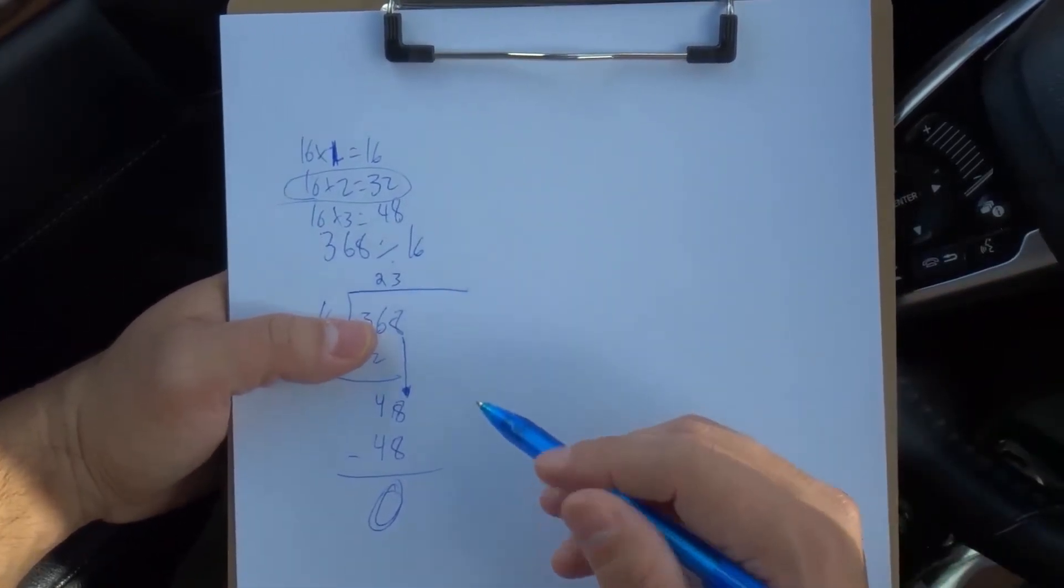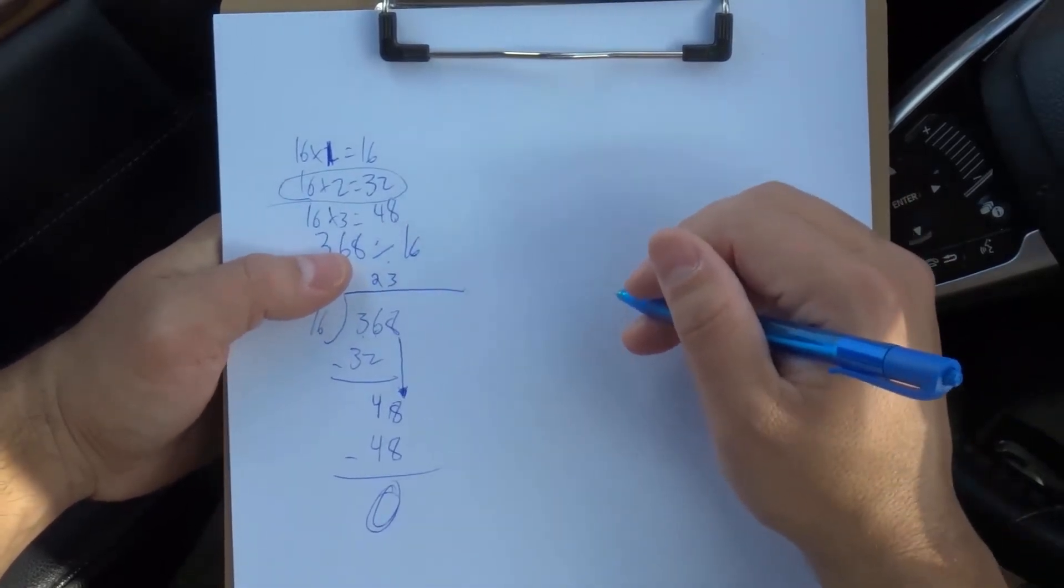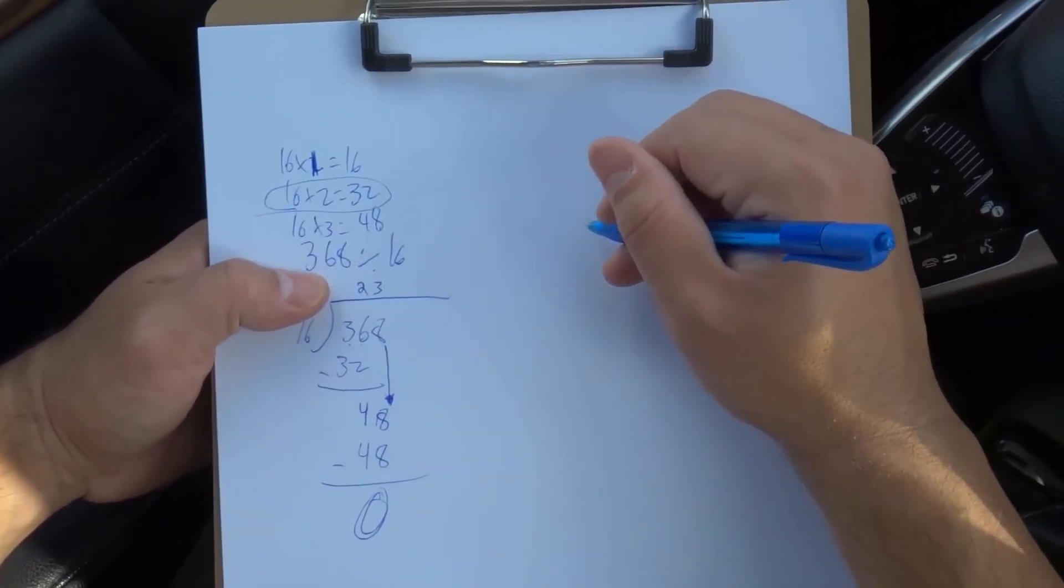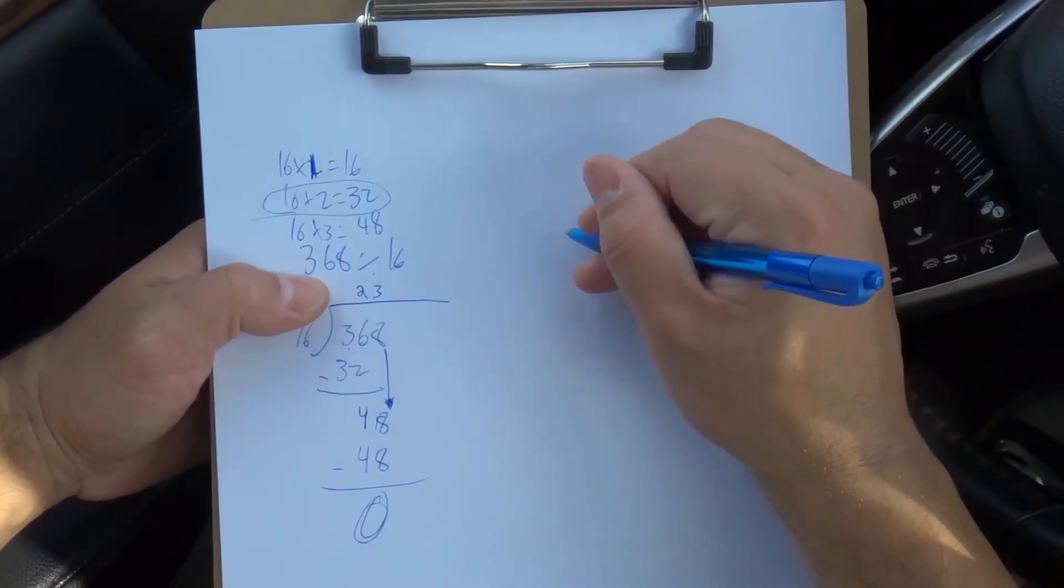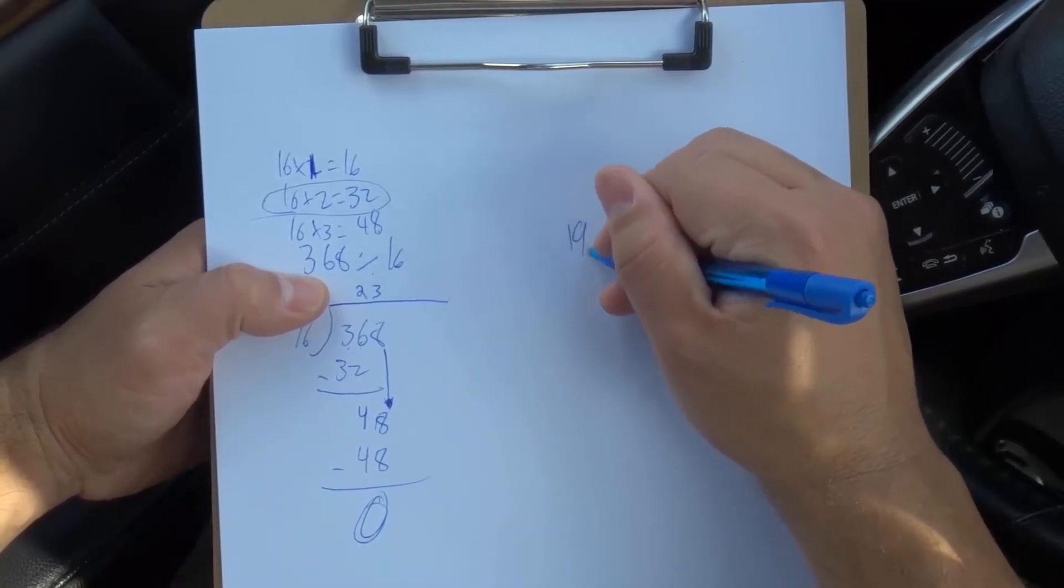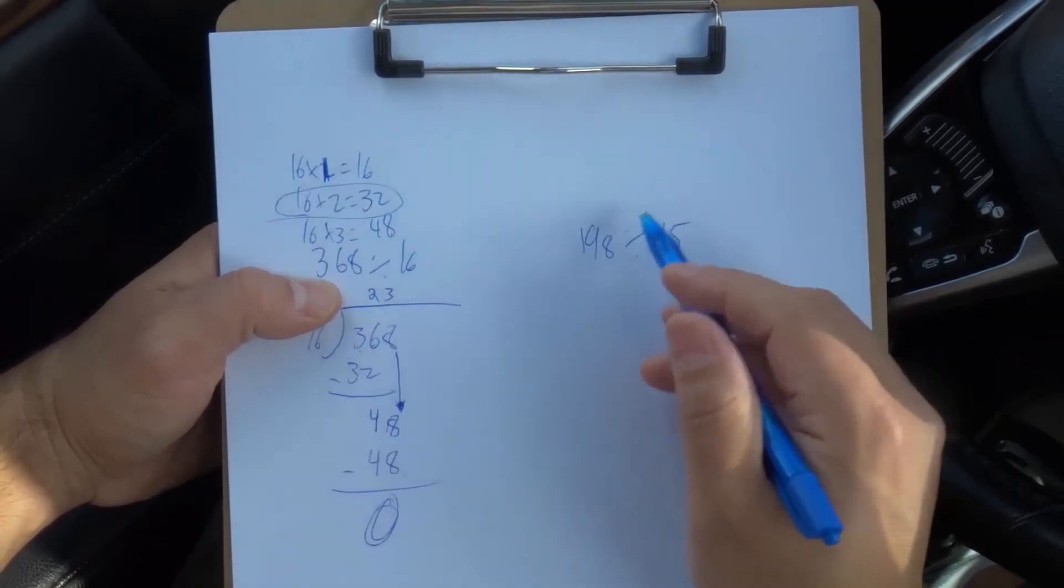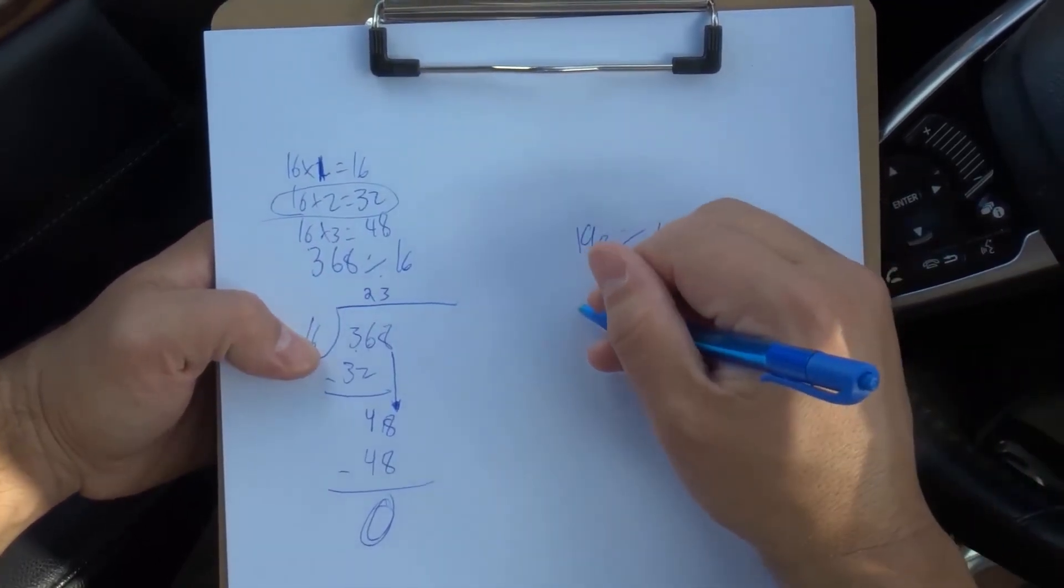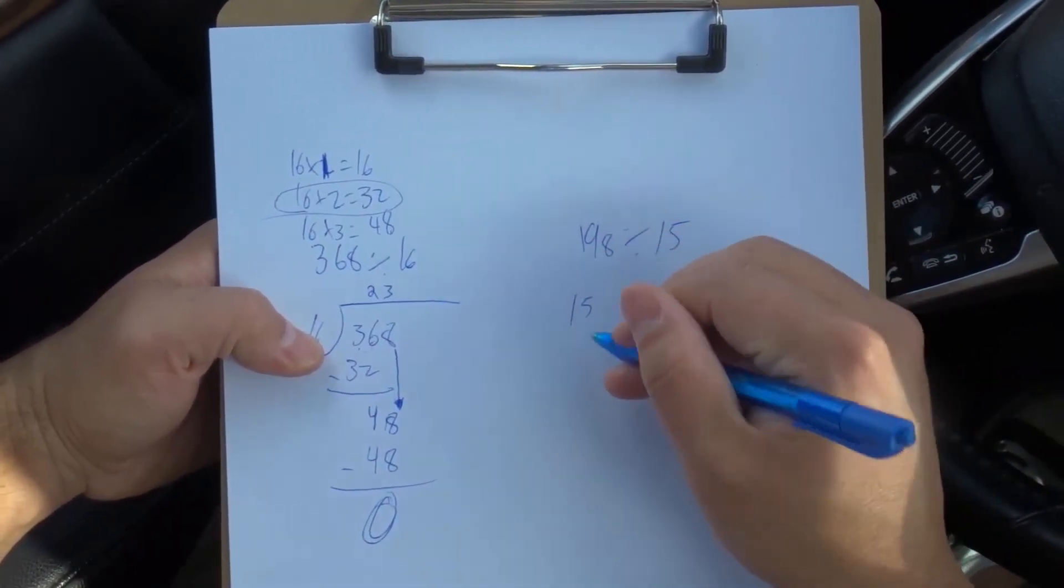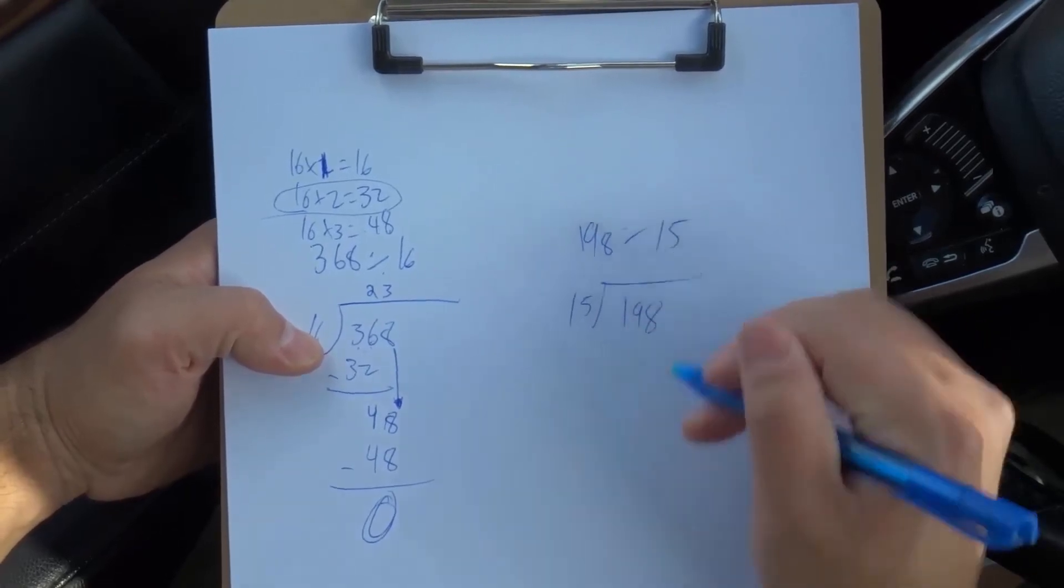This one is going to actually have a remainder. So we're going to do 198 divided by 15. So we have 198 divided by 15. This is a nice, simple equation, but we're going to put the small number on the outside 15, then 198 over here.